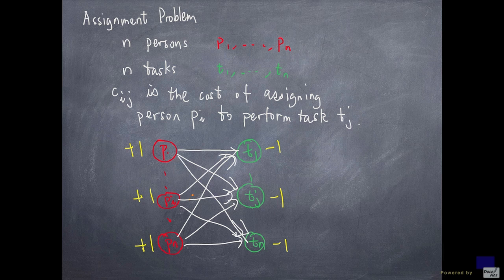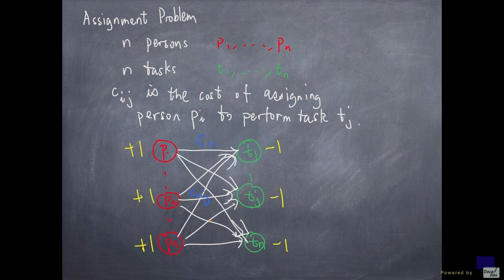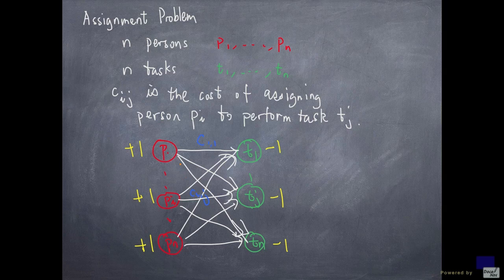And so the arc cost will be, say c1,1 here, and in general, it will be ci,j. I claim that solving the minimum cost flow on this uncapacitated network will solve this assignment problem.